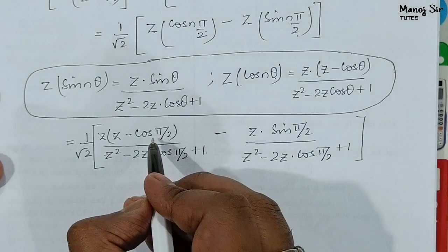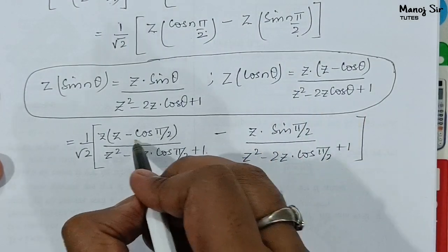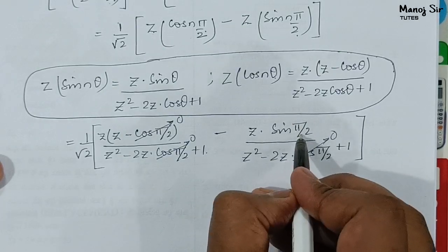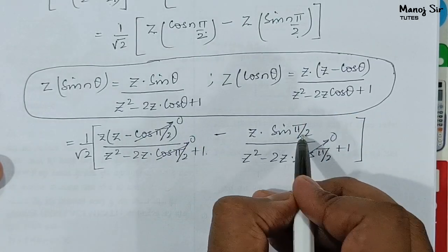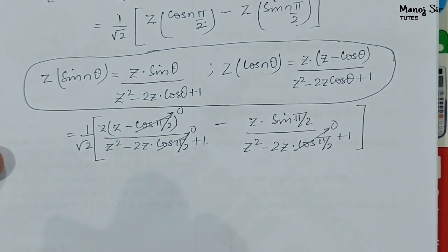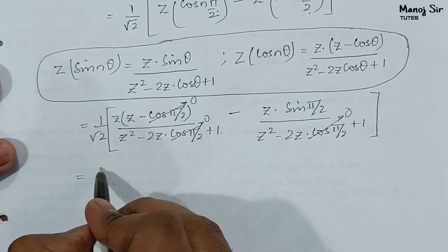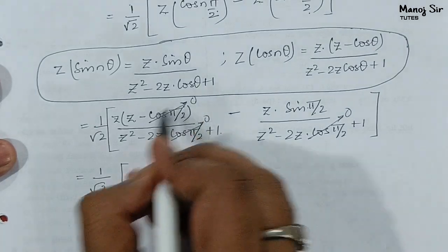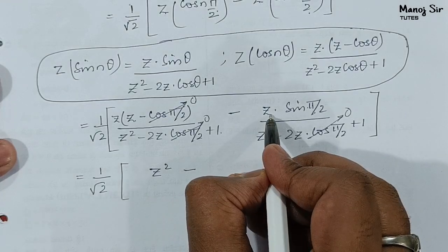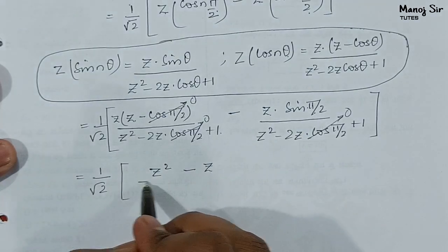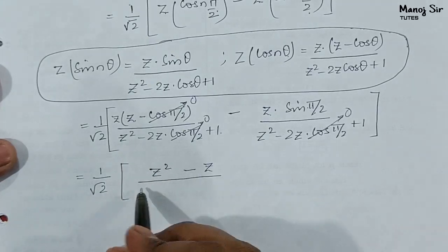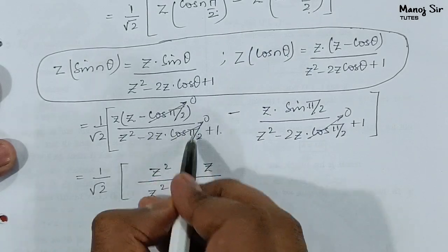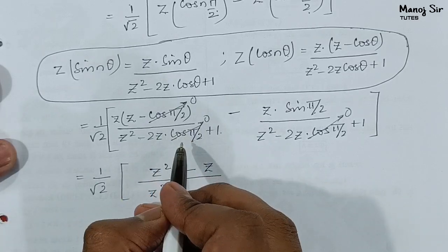Now, cos(π/2) = cos(90°) = 0, and sin(π/2) = 1. Substituting: cos(π/2) = 0 makes several terms vanish. The Z transform of cos(nπ/2) becomes Z·(Z − 0) / (Z² − 0 + 1) = Z² / (Z² + 1). The Z transform of sin(nπ/2) becomes Z·1 / (Z² + 1) = Z / (Z² + 1). The middle term 2Z·cos(π/2) vanishes, leaving denominator Z² + 1.